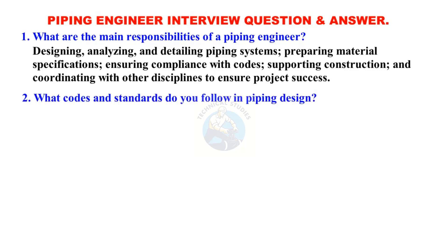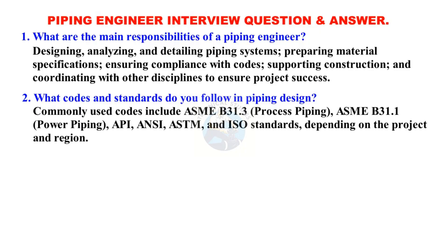What codes and standards do you follow in piping design? Commonly used codes include ASME B31.3 Process Piping, ASME B31.1 Power Piping, API, ANSI, ASTM, and ISO standards, depending on the project and region.